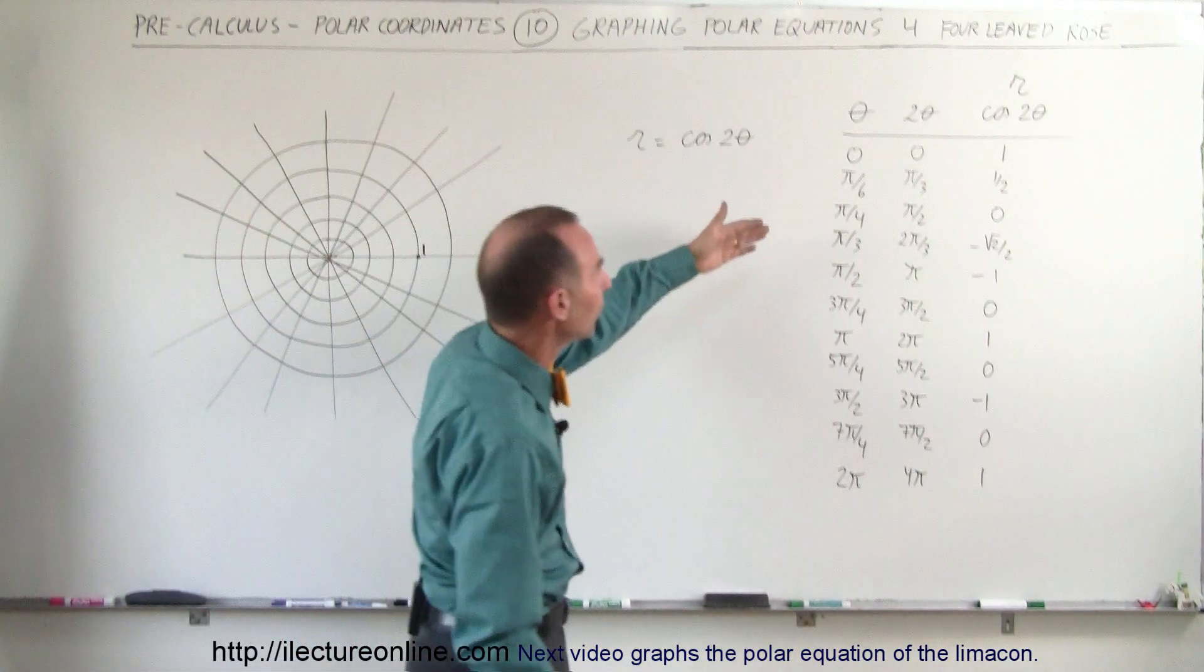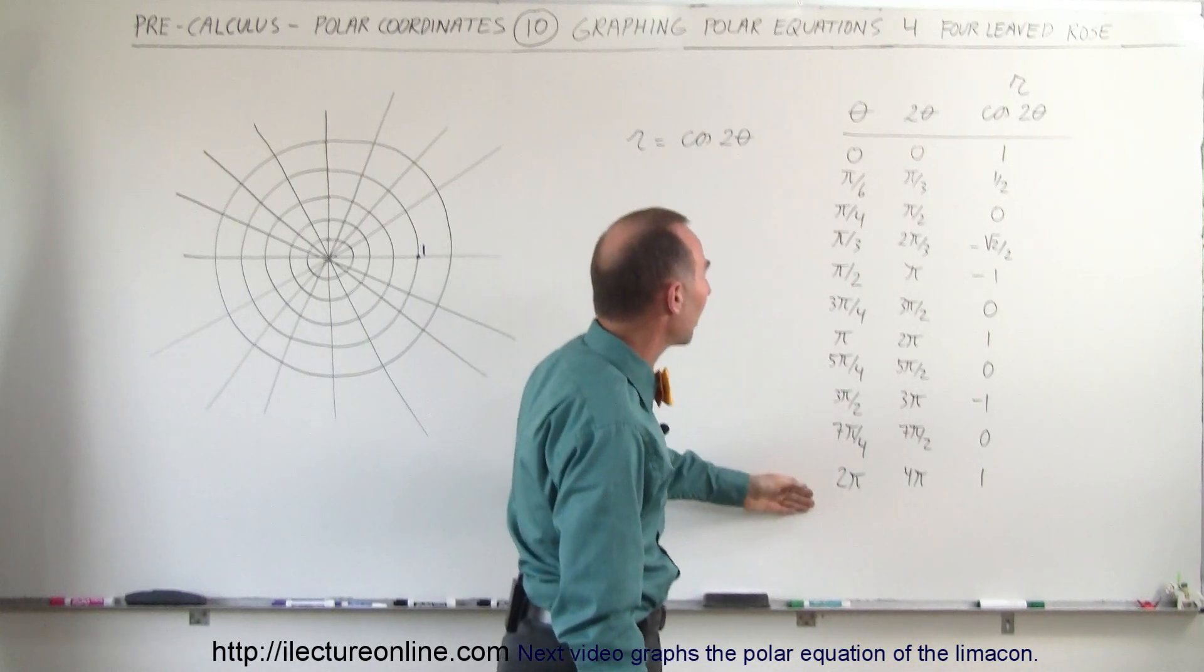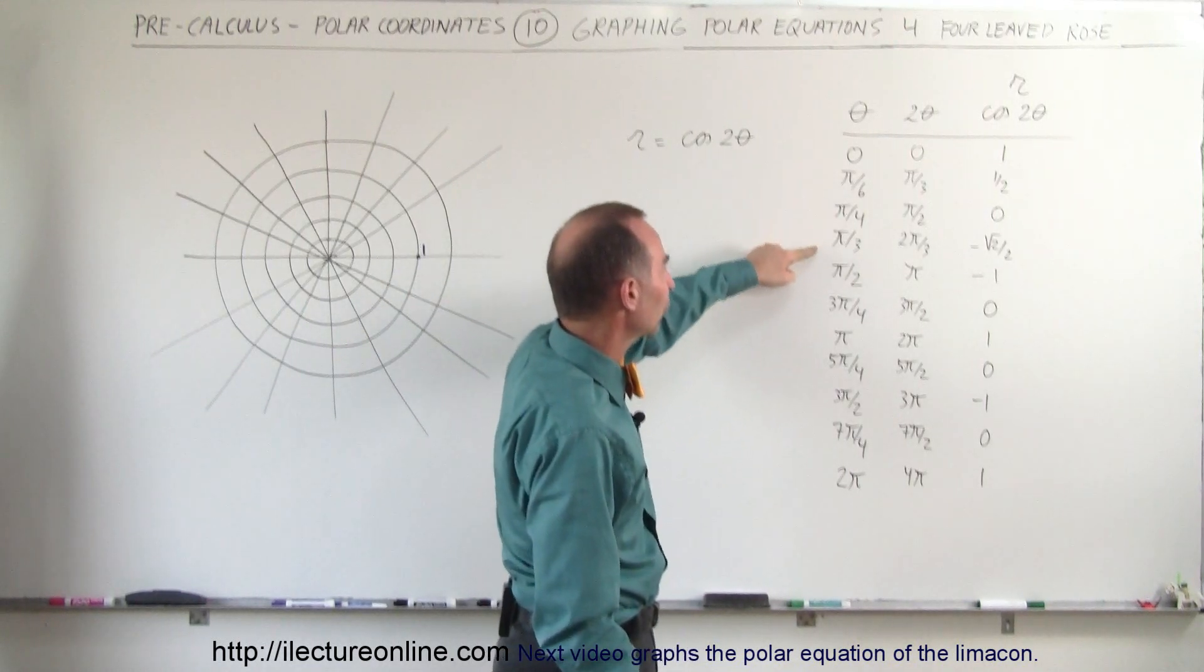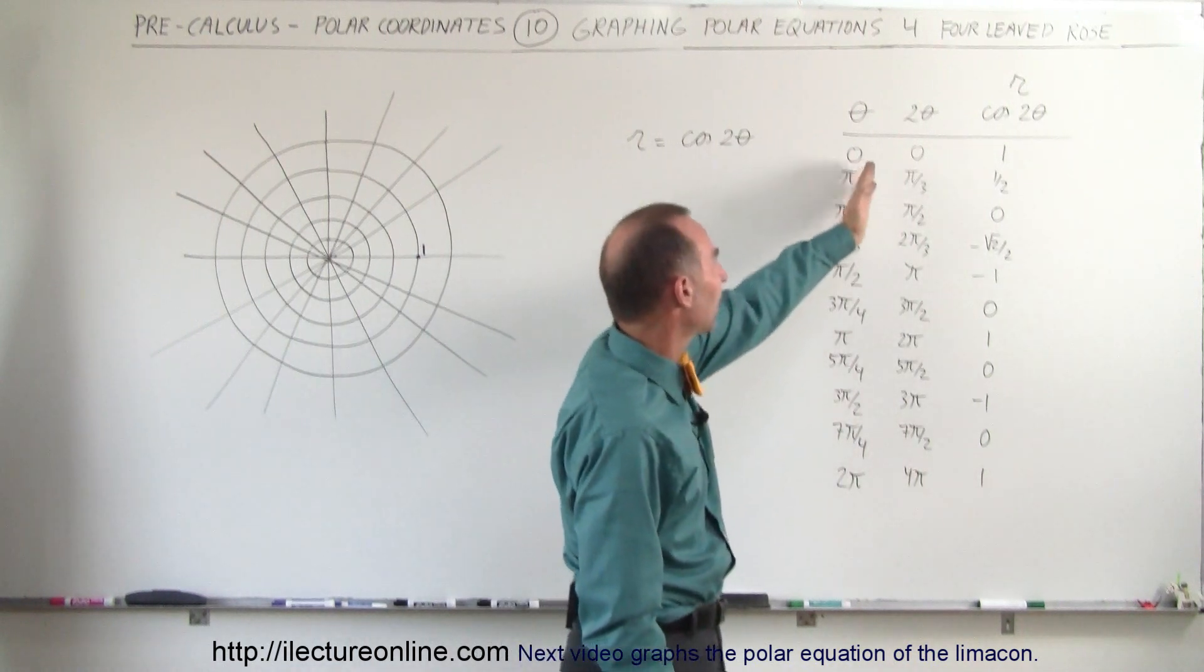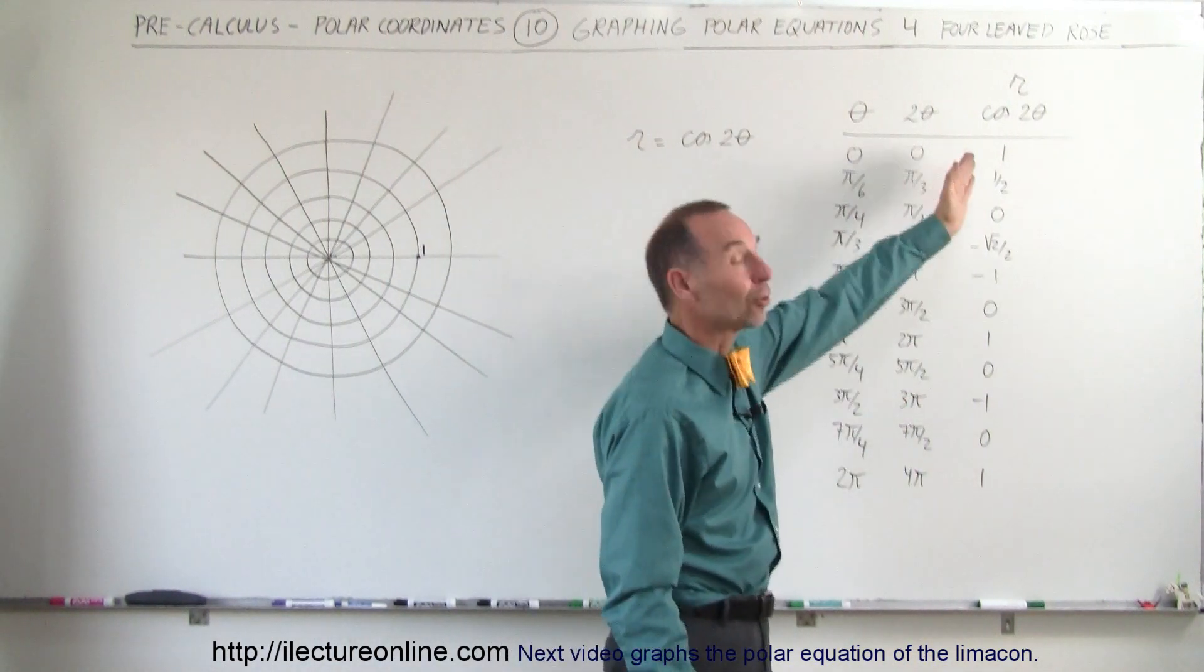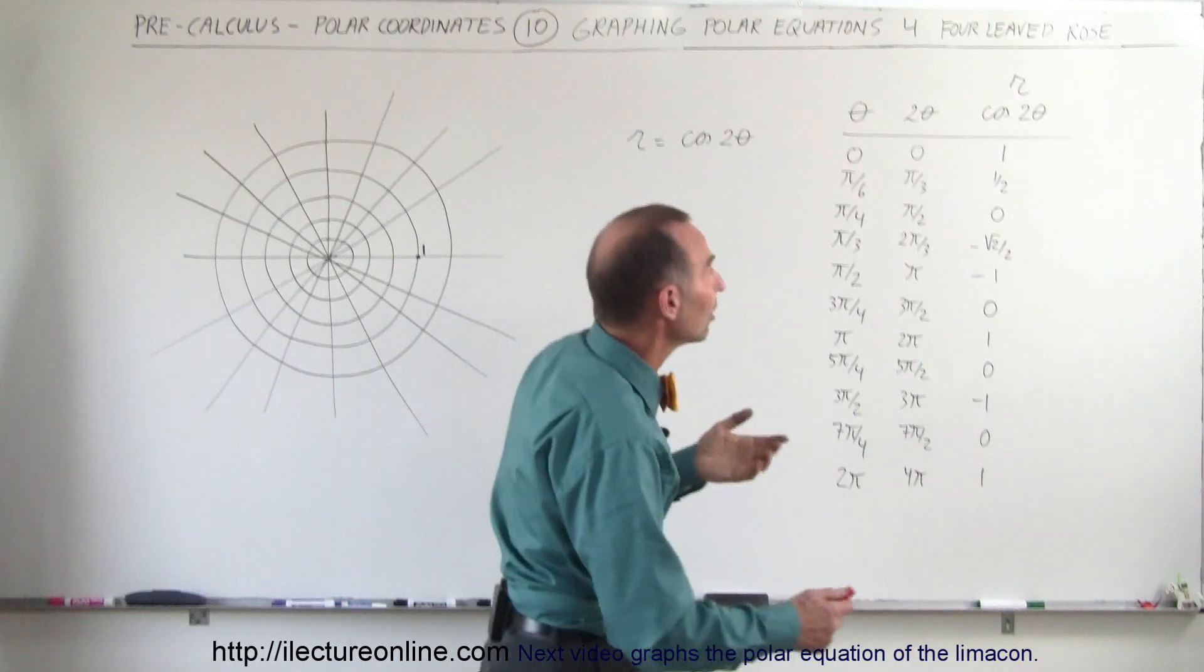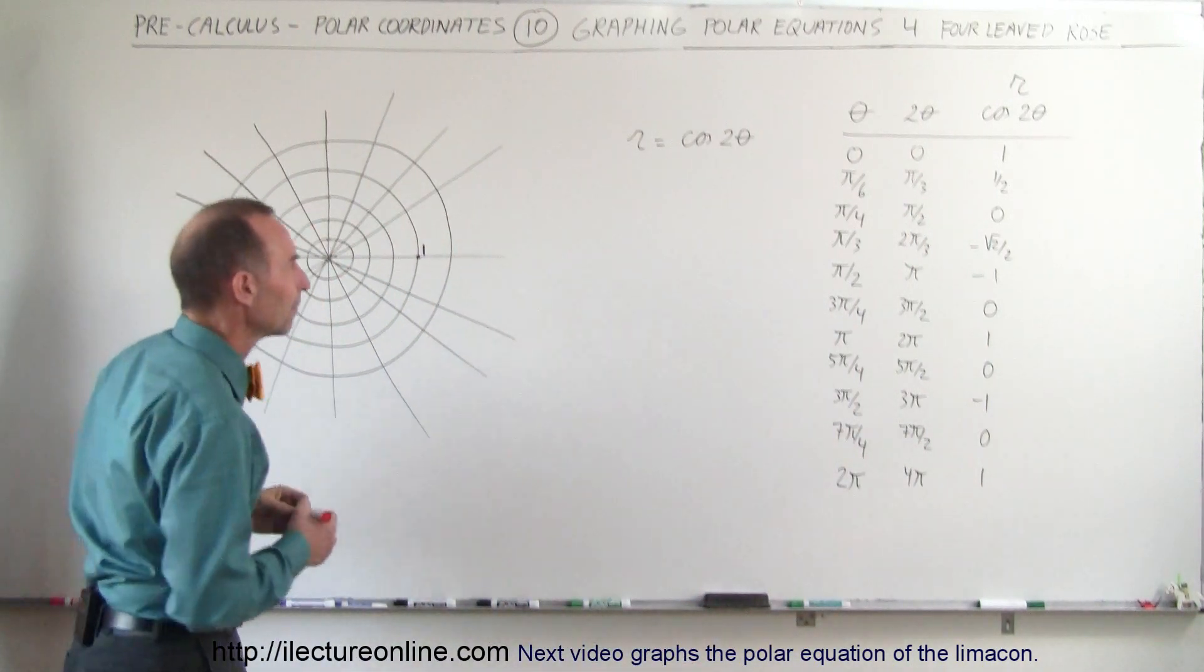Again, I've got a table ready for us. Angles from 0 to 2 pi. Notice that initially we have small intervals and then we make the intervals a little bit bigger. Of course, then we have to multiply the angle times 2 and then take the cosine of that double angle, which then is equal to R. So let's see what this graph looks like.